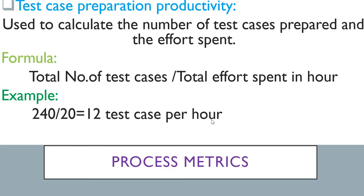The first process metric is test case preparation productivity. It is used to calculate the number of test cases prepared and the effort spent. The formula is: total number of test cases divided by total effort spent in hours. For example, 240 test cases divided by 20 hours equals 12 test cases per hour. So it tells you how many test cases you can create per hour — in this case, 12.